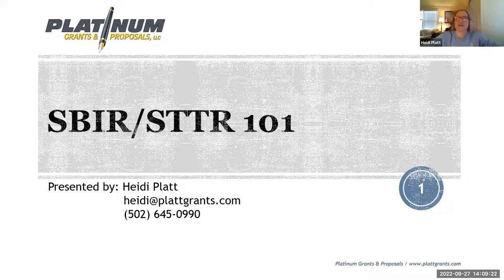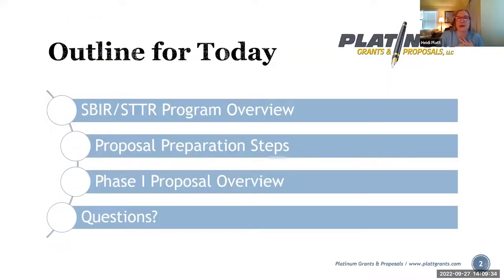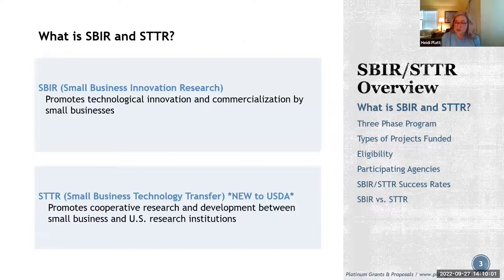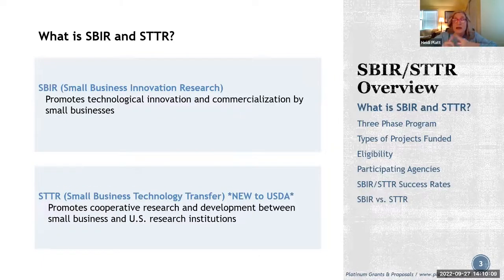Sorry we're getting started late. Today we're going to be talking about SBIR/STTR 101 — a general overview of the whole program. First we'll cover the program itself, then proposal preparation steps and a Phase 1 proposal overview, leaving about 15 minutes at the end for questions. Feel free to put questions in the chat as you think of them or save them for the end. We'll cover the SBIR/STTR overview including the three-phase program, types of projects funded, eligibility, participating agencies, success rates, and SBIR versus STTR.